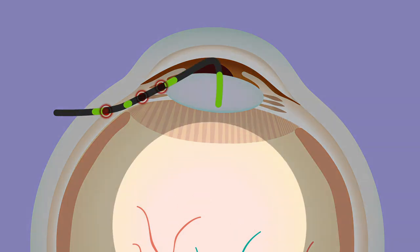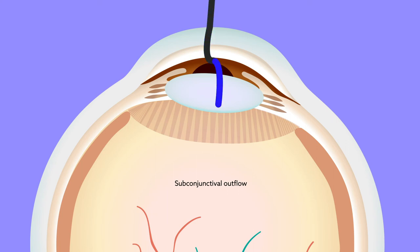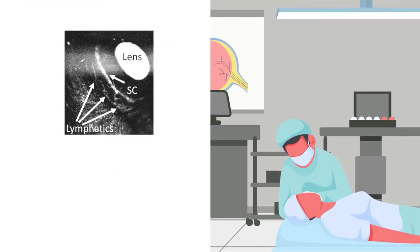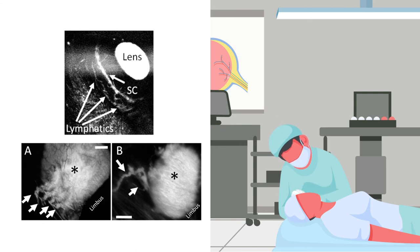Unlike the other two routes, there is currently no evidence that subconjunctival outflow directly affects physiologic intraocular pressure. But because of the potential effects on glaucoma surgery and drug delivery, the subconjunctival route could be exploited to improve eye care. Bleb-related surgeries, which are reserved for patients with highly advanced glaucoma, may be enhanced by improving lymphatic outflow. And improved drug delivery through the subconjunctival route could aid the treatment of all eye diseases that require drug therapy.